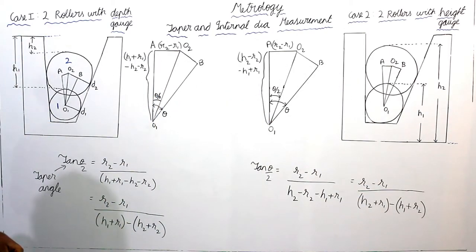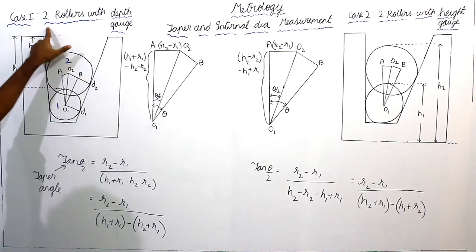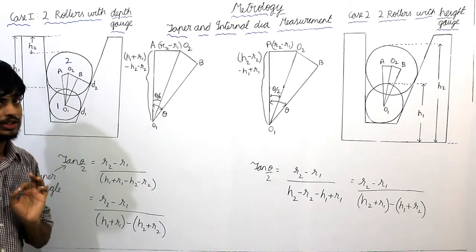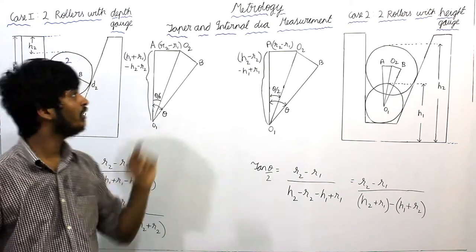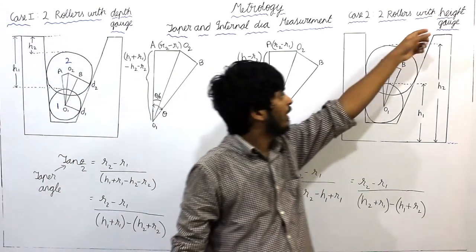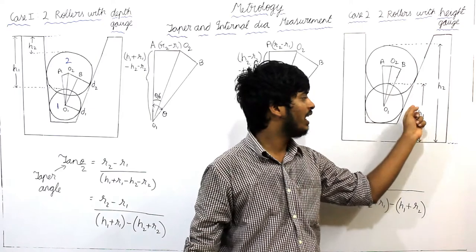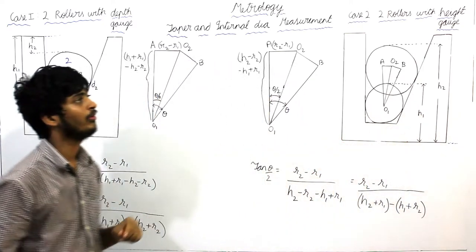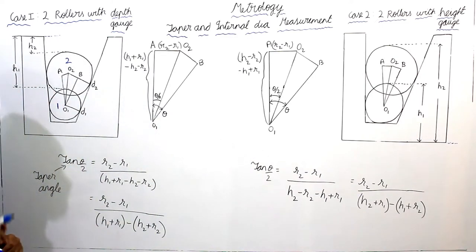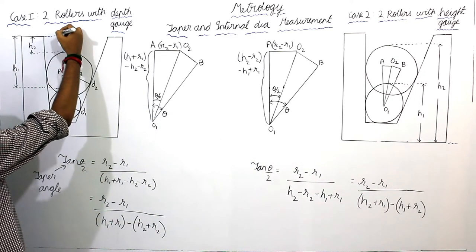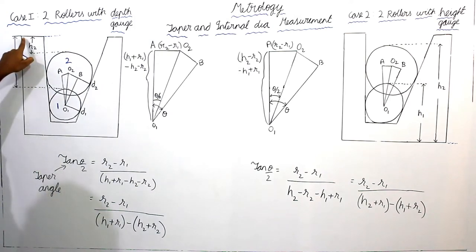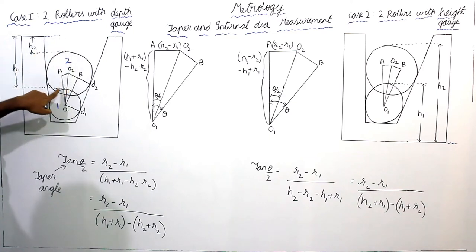Case 1: find the taper angle for a component using two rollers of diameters D1 and D2 (different diameters) with the help of a depth gauge. If the question specifies a depth gauge, then we have to measure height with respect to the top plane of the component. R is the radius of the rollers. x2 is the distance from the top plane to the top of roller 2, and x1 is the distance from the top plane of the component to the top of roller 1.